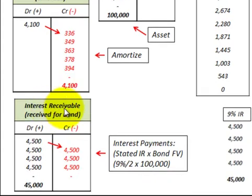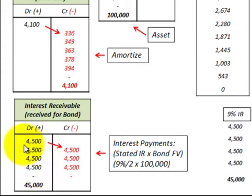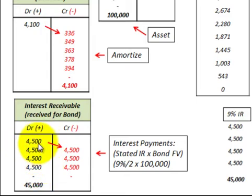The interest receivable account holds those semi-annual interest payments we receive on the bond — $4,500 each. That's based on the 9% stated rate divided by two, or 4.5% per period, times the $100,000 face value, giving us that $4,500 payment each period.